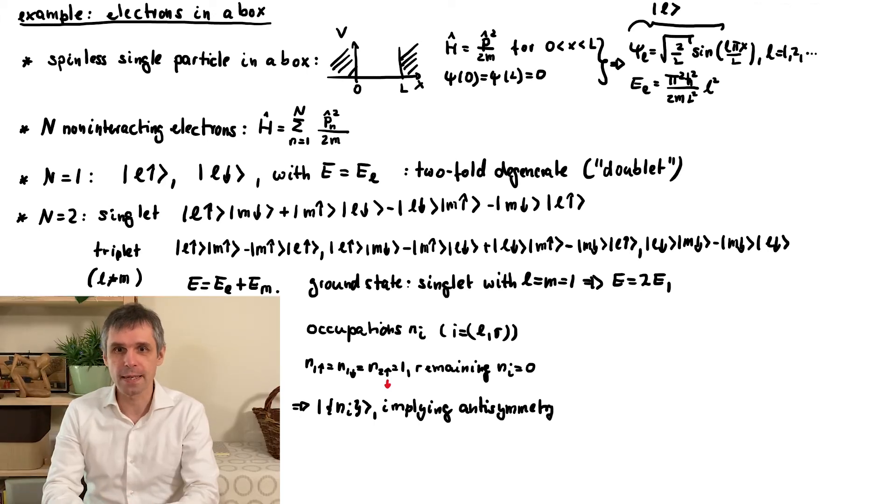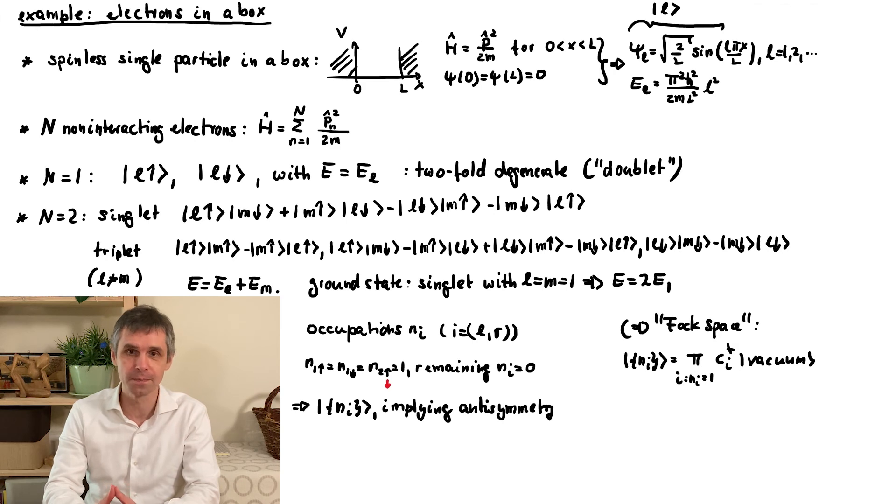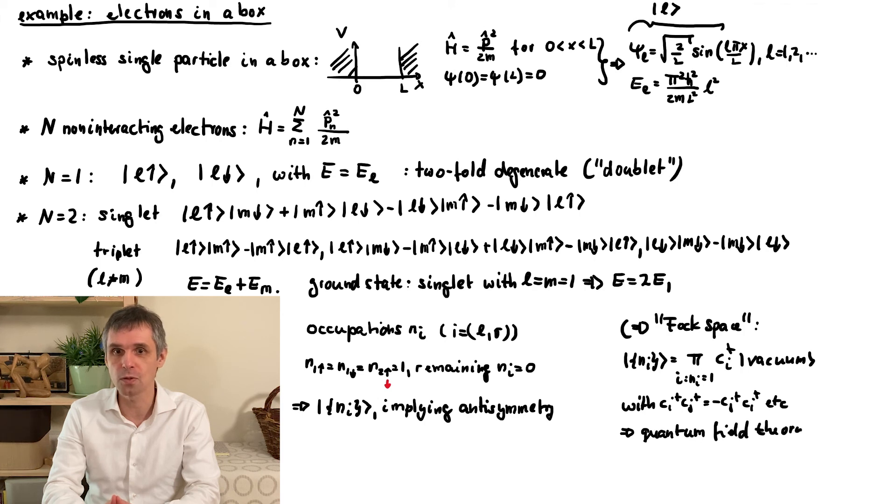Just for information, this anti-symmetrization occupation picture can be used as a starting point to formulate a theory for an arbitrary particle number, where the Hilbert space is a so-called Fock space. Furthermore, we can then apply operators similar to the creation and annihilation operators in the harmonic oscillator to create all these states from a vacuum state with no particles. This leads us towards quantum field theory. Well, the harmonic oscillator-like operators would lead to bosons, but the anti-symmetrization for fermions can be enforced by adjusting the corresponding algebraic relations. With this, one can also define a number operator, which then automatically has eigenvalues 0 or 1 only. But this remark is really just for information.